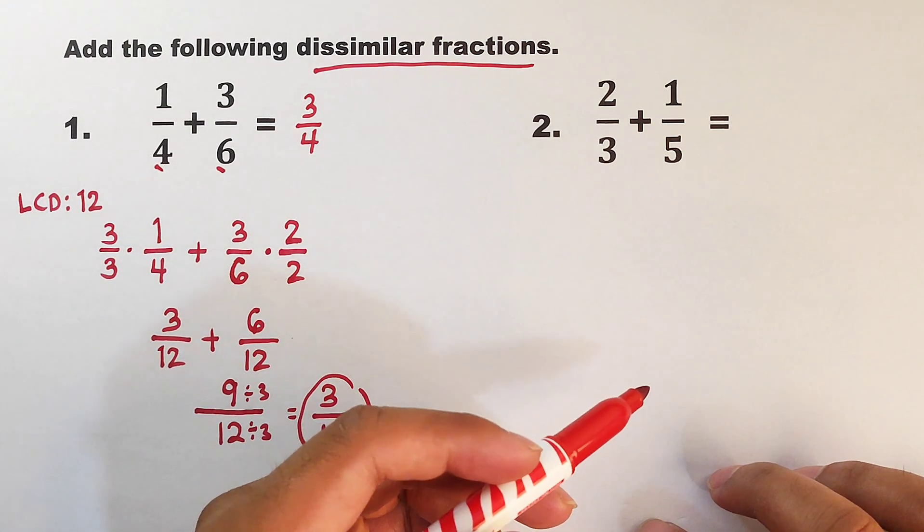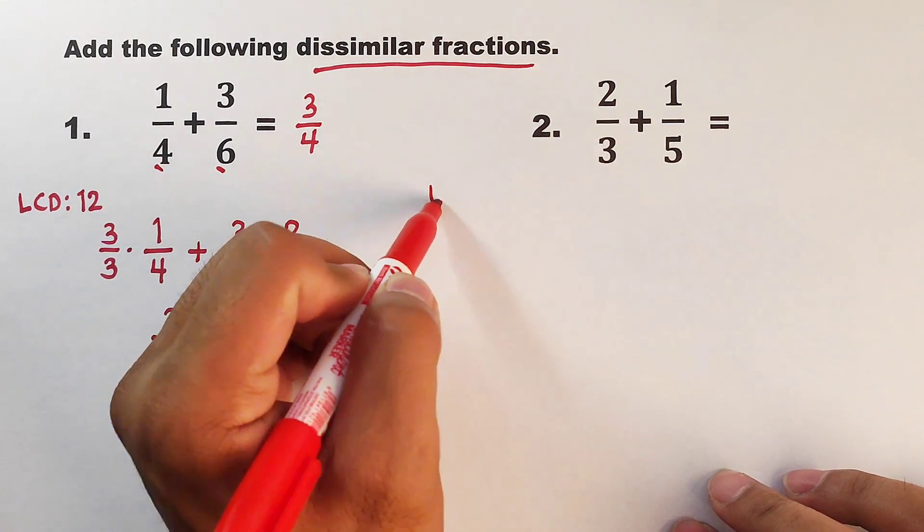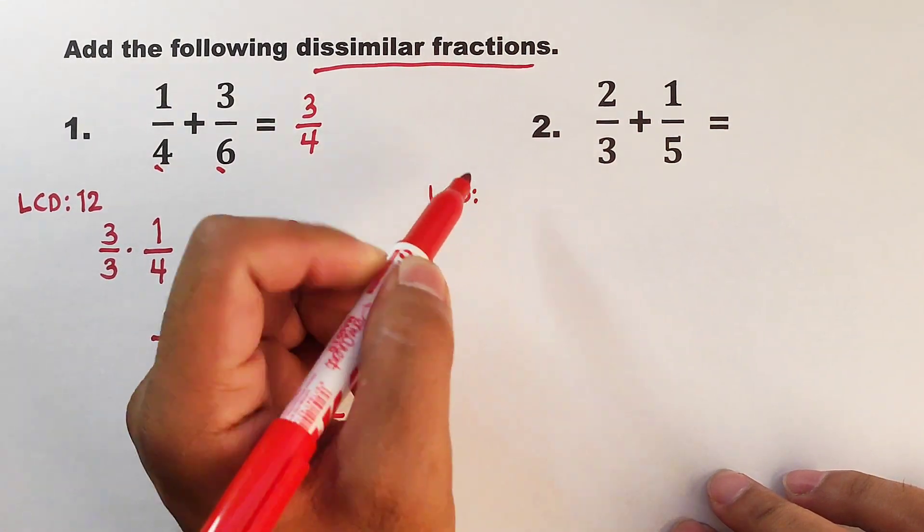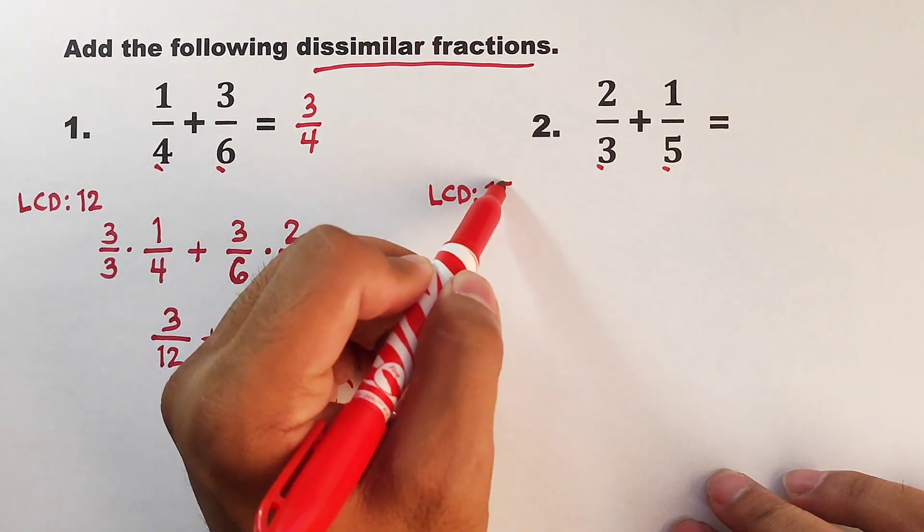Now let's continue answering 2 over 3 plus 1 over 5. First, we will figure out the LCD between 3 and 5. And that would be 15.